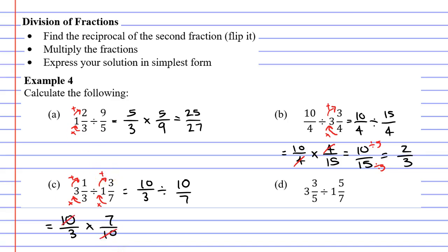We can cancel the tens and our solution will be 7 over 3, which we can convert to a mixed numeral. How many times does 3 fit into 7? Well, it fits into 7 twice with a remainder of 1. 1 becomes our numerator and our denominator is the same as the denominator before. It stays as 3.